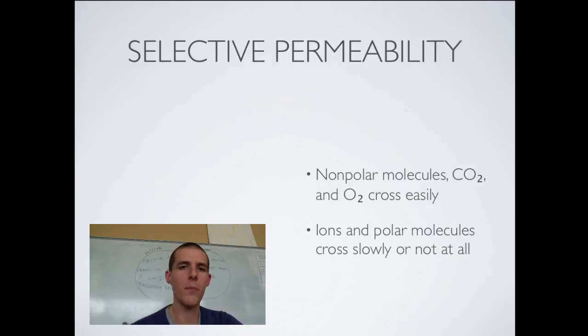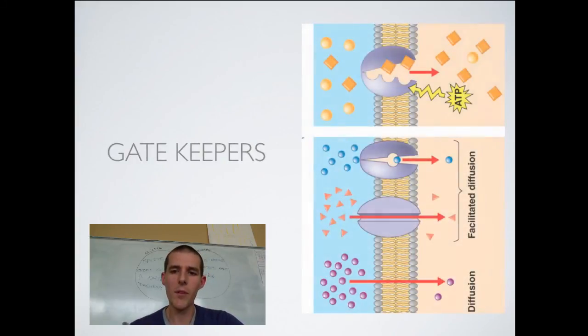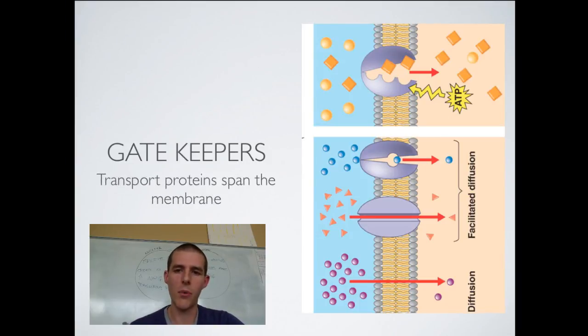If you are an ion, which means you've got a positive or negative charge, if you are a polar molecule, you are going to cross slowly or not at all. The bouncer doesn't like your clothes. He's keeping you out. So, what happens in these cases? We've got some gatekeepers that help out with the process. And these are going to be integral proteins that cross across the cell membrane. And what they do is they help the things to get in that need to get in and they keep things out that need to get out.